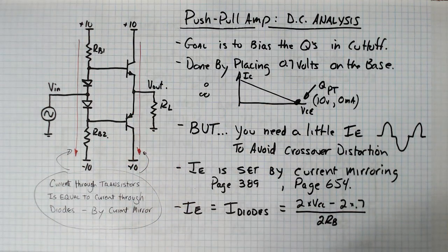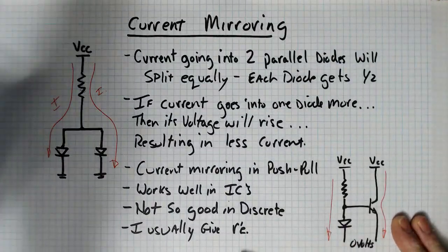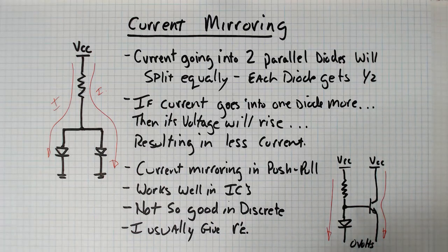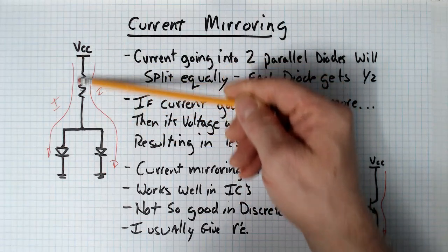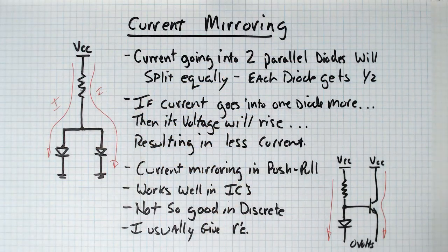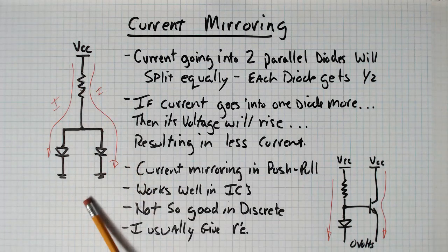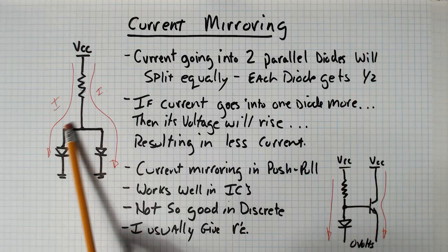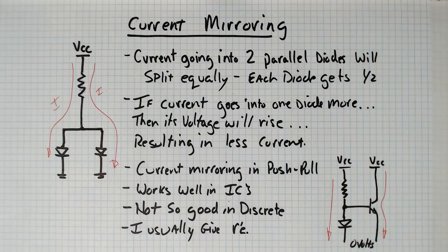Now, current mirroring, let's talk about that. So the basic idea behind current mirroring is that if you have current coming down through a resistor here and you're going into two parallel diodes, current mirroring is based on the idea that if you have a circuit like this, then the current would split equally between these two diodes and they would each get the same current. That, of course, has a few caveats on that: that the diodes are the same type of diode and they just, you pull them out of the bag one after another.